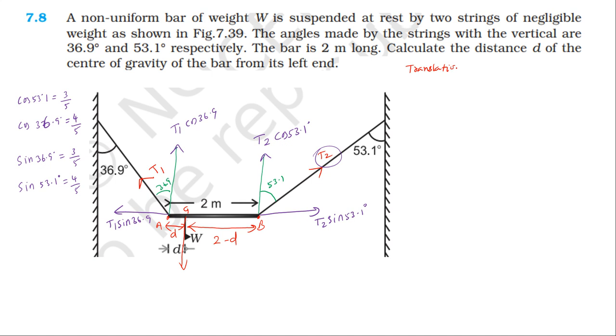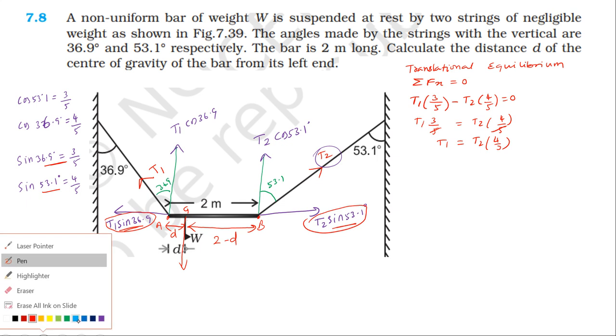Translational equilibrium. Net force along x-axis is 0. T1 sin 36.9, which is 3 by 5, equals T2 sin 53.1, which is 4 by 5. So T1 into 3 by 5 is equal to T2 into 4 by 5. Therefore T1 is equal to T2 into 4 by 3.